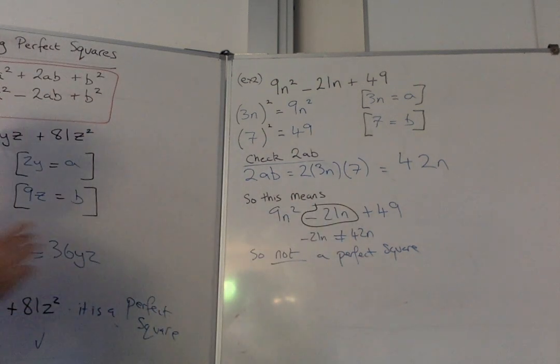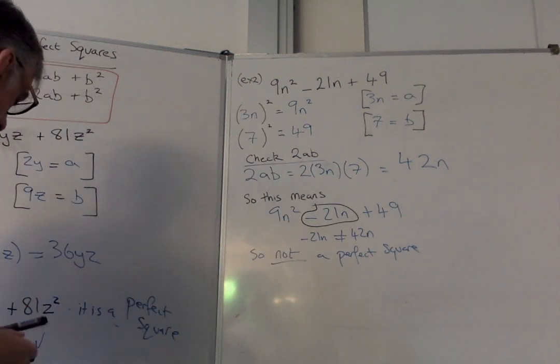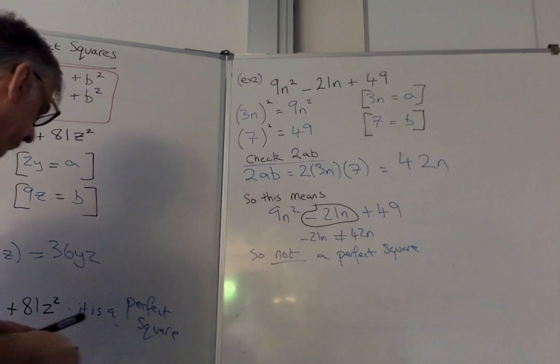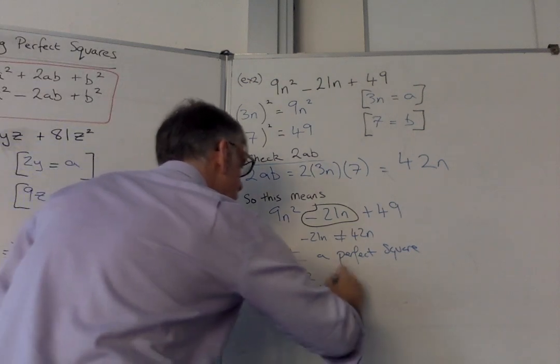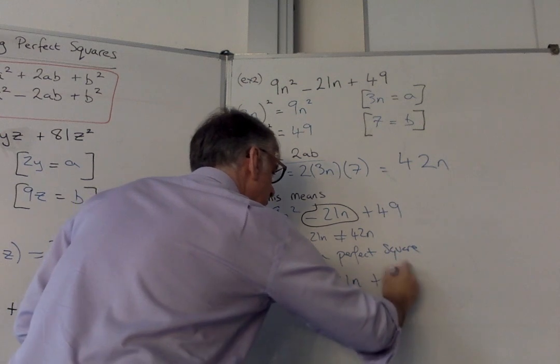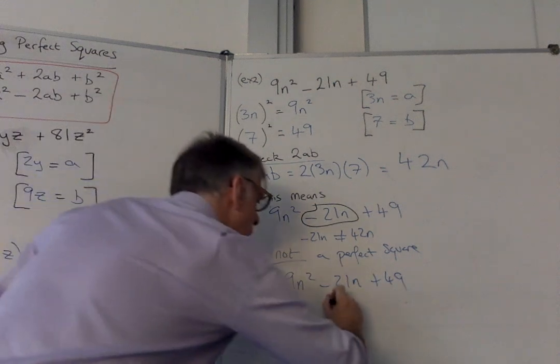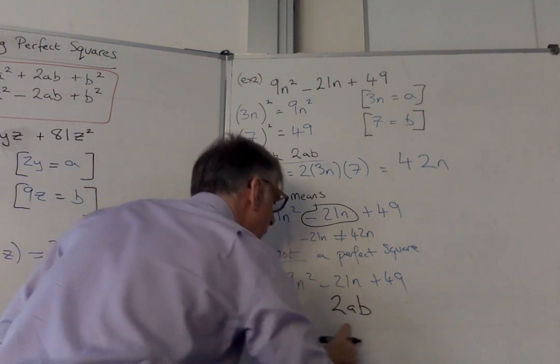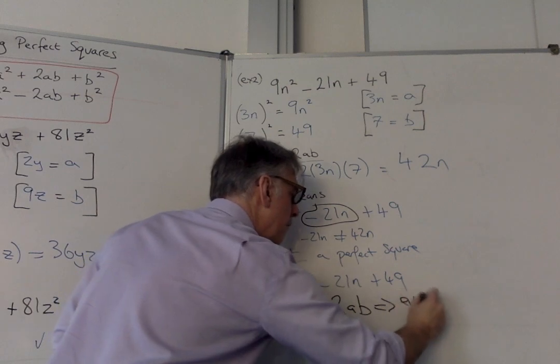Now, I could have realized it wasn't a perfect square before I'd done all this. Because if you remember, when you have, I'll write it again, 9n² - 21n + 49. This part has to be equal to 2ab. And if you've got a 2 here, that means this is going to be even.